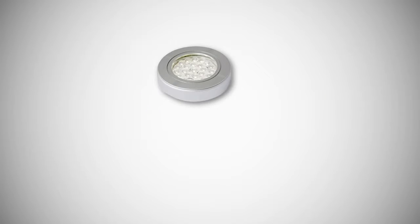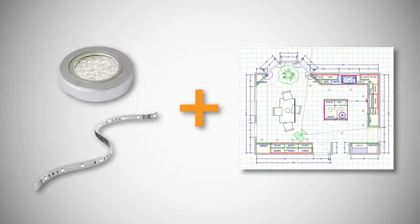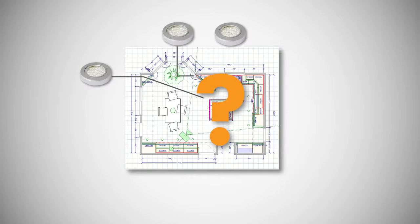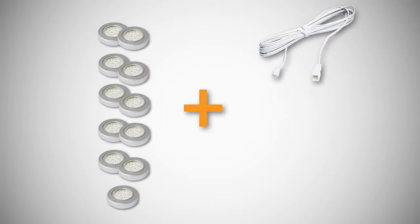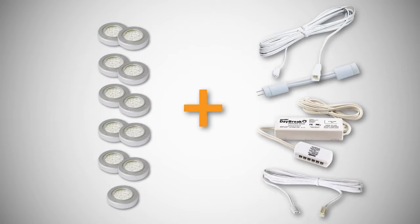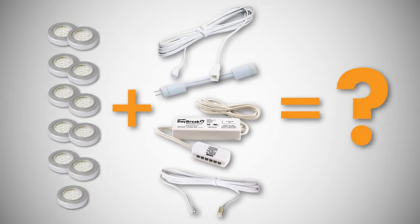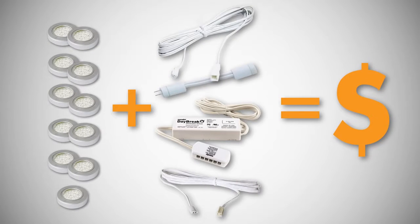Let's face it, adding task and exit lights to a design can be complicated. Where should they be placed? What components are required? How much will they cost?